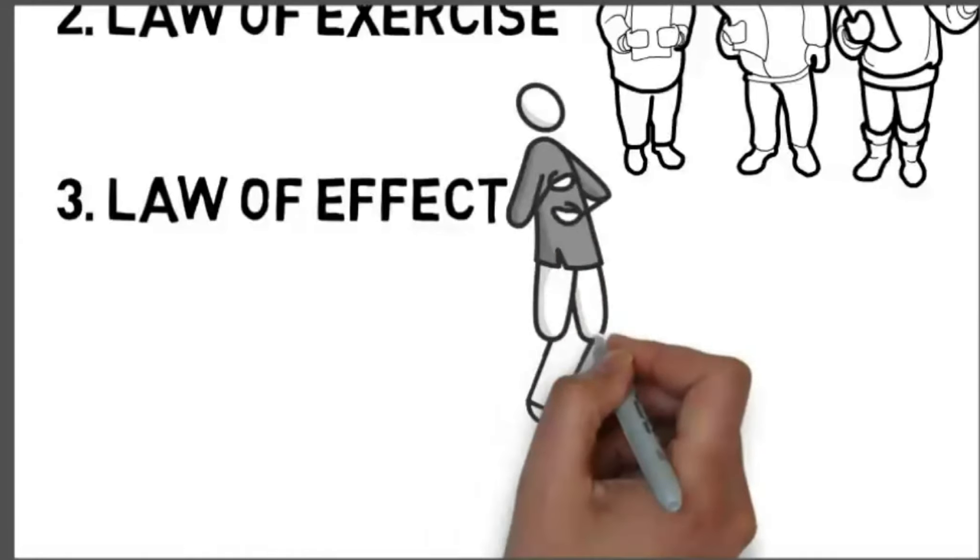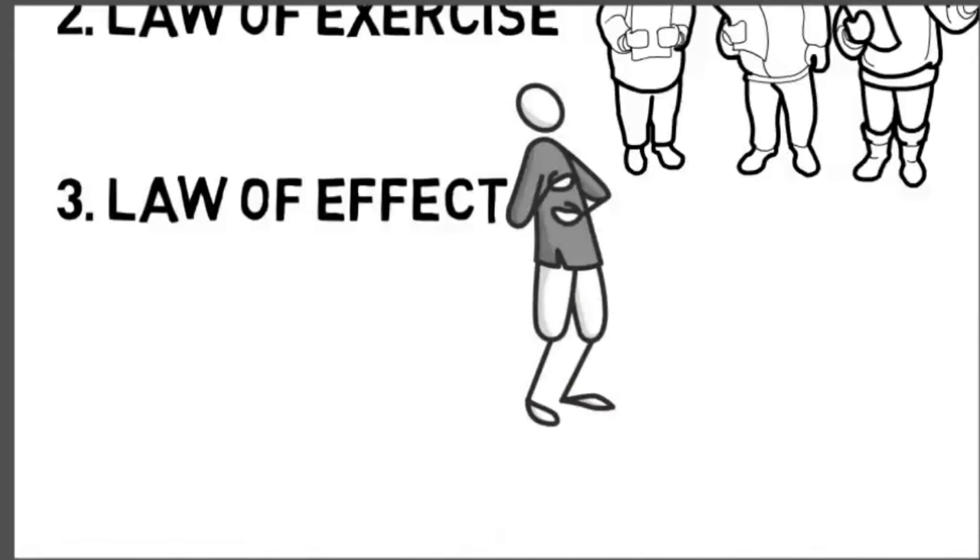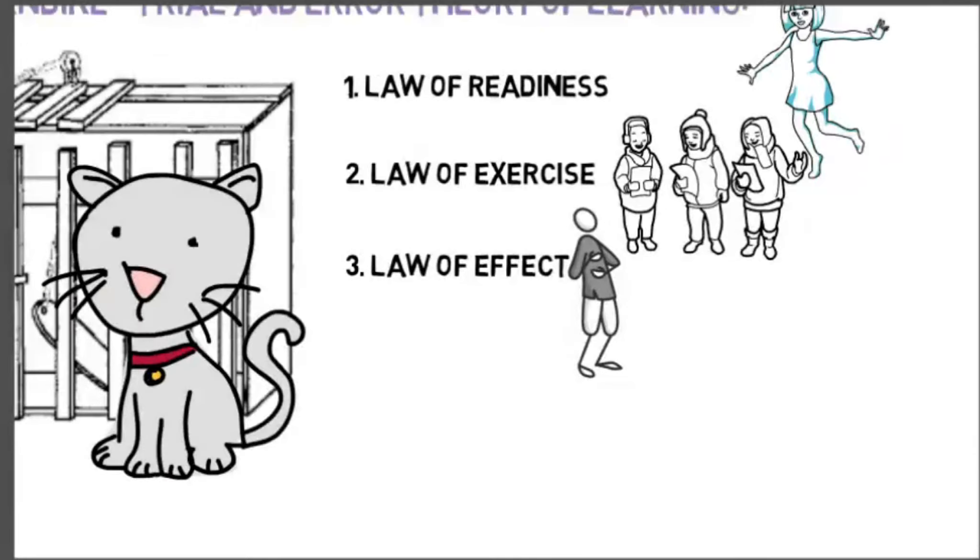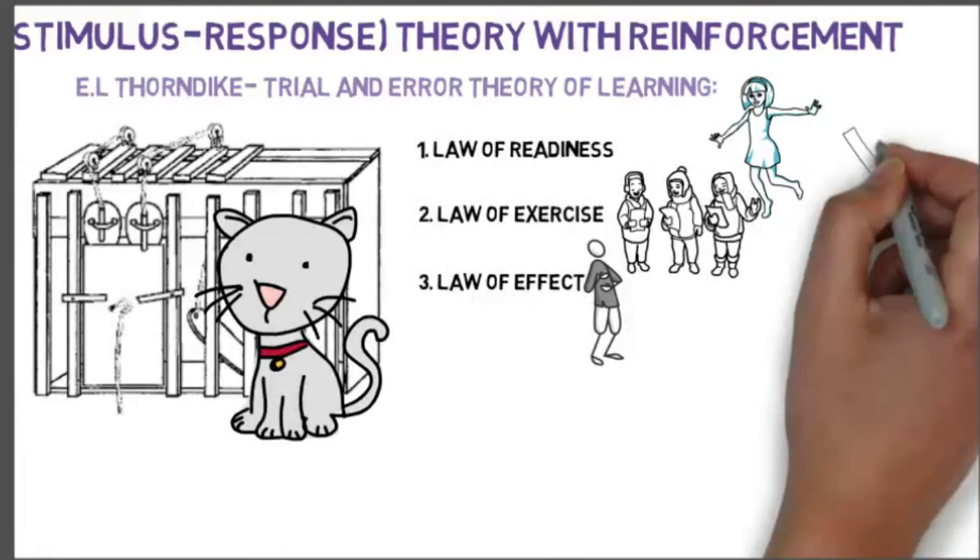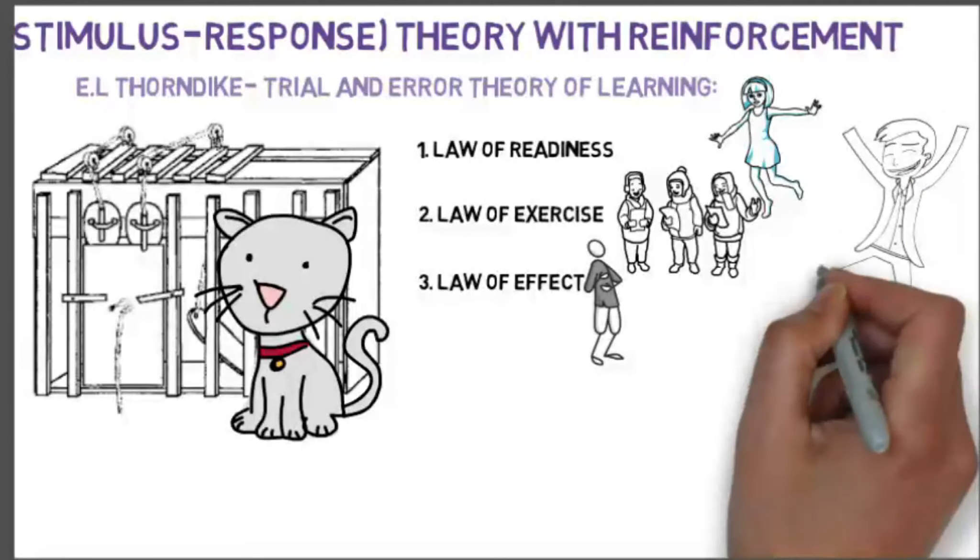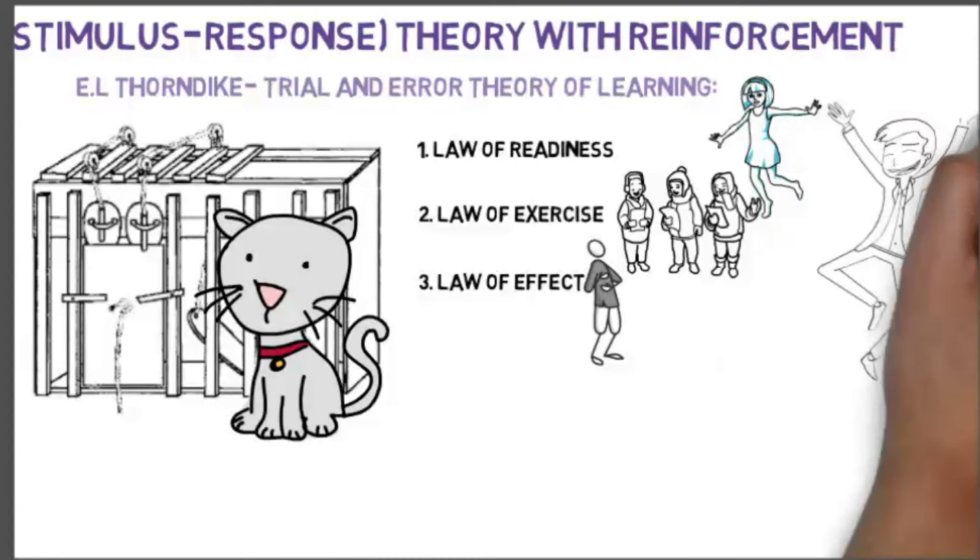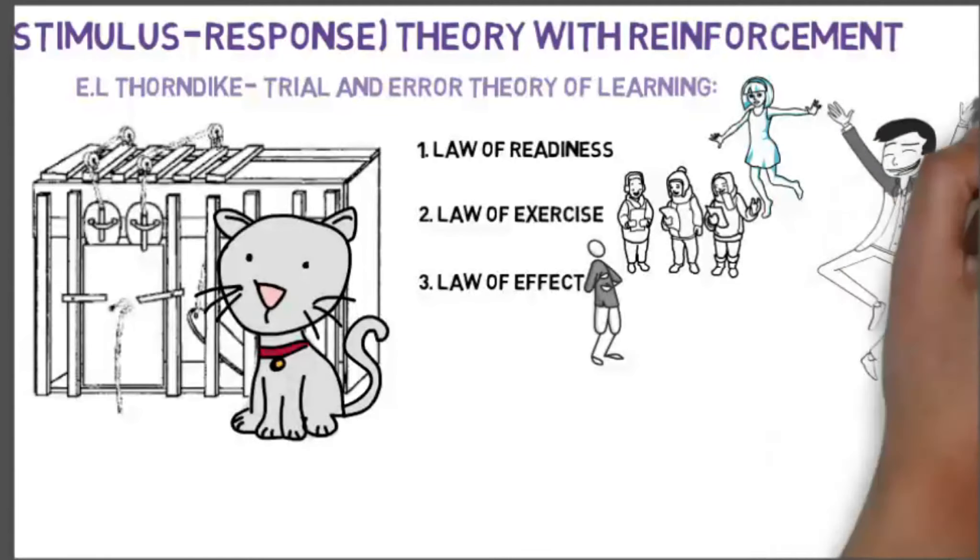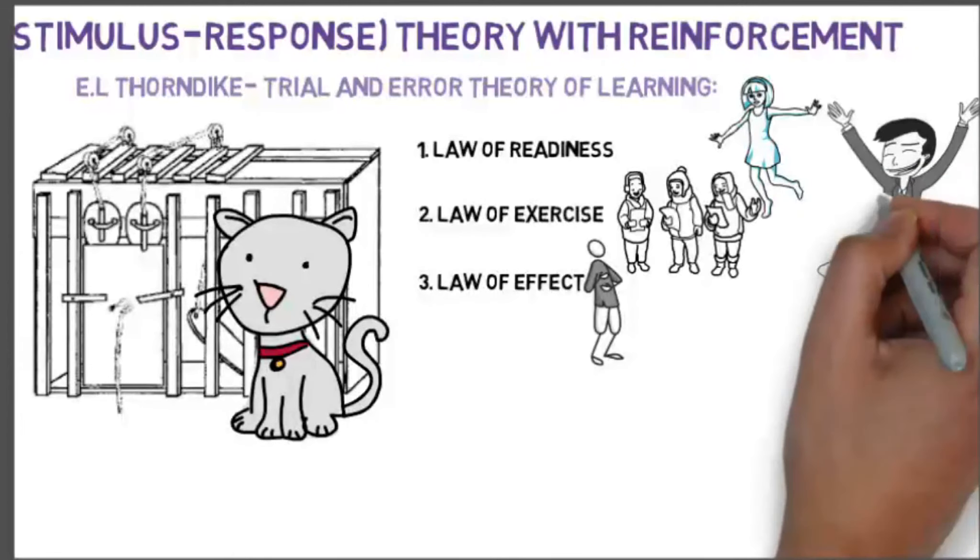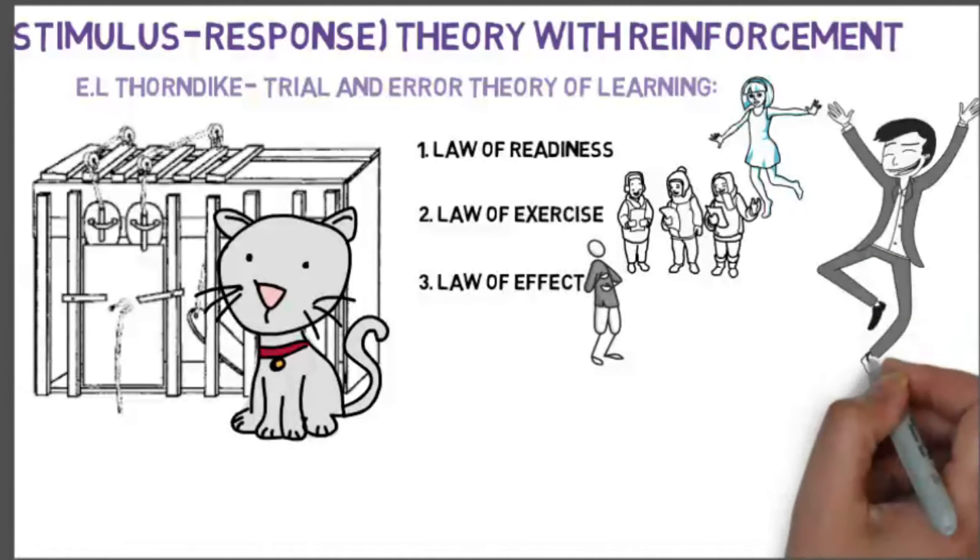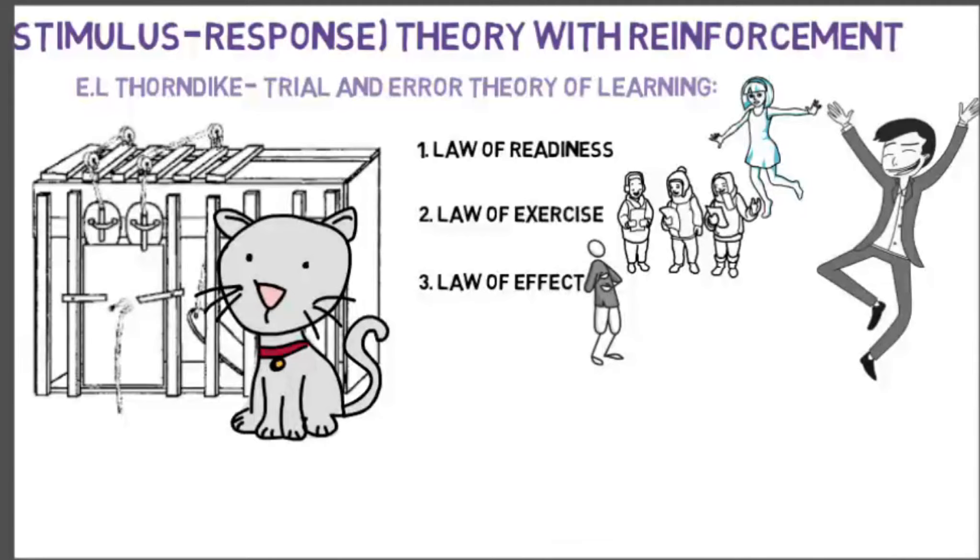There is an educational implication to this, and that is that this law signifies the use of reinforcement or feedback in learning. This implies that learning trials must be associated with satisfying consequences. The teacher can use rewards to strengthen certain responses and punishment to weaken others. However, the use of rewards is more desirable than the use of punishment, particularly in school learning. The teacher, for motivating the students for learning situations, can exploit the use of reward.